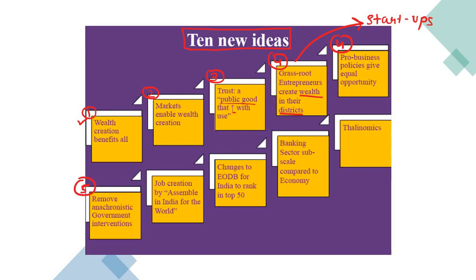The fifth idea is to remove anachronistic government interventions — government monopoly or negative domination should not be there. Sixth is job creation by assembling in India. Seventh is changes to EODB — Ease of Doing Business — for India to rank in the top 50. Eighth is that the banking sector is sub-scale compared to the economy. Ninth, and very important, is Thalinomics — a new chapter added to Economic Survey 2019-20.